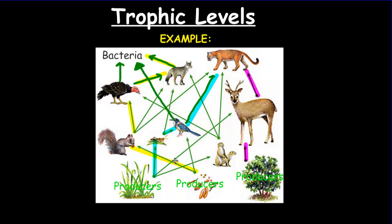I have three highlighted food chains. Starting with the pink food chain: the producer gets eaten by a deer, which gets eaten by a mountain lion. The deer is a primary consumer — most herbivores will always be primary consumers because all they eat is producers. The deer is then hunted by the mountain lion, which we label as a secondary consumer. This particular food chain ends at the secondary consumer level.